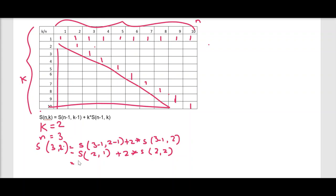These values you have to fetch from this table. You can see S(2,1) means this 2 is n, comma k, 2 comma 1 means this value. It is 1 + 2 × S(2,2). This is 2 comma 2, this is also 1, which is going to be 1 + 2 = 3. The value here will be 3.